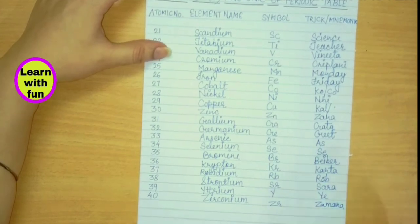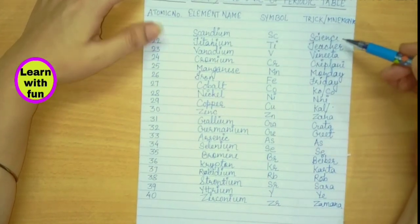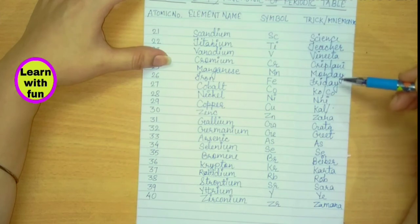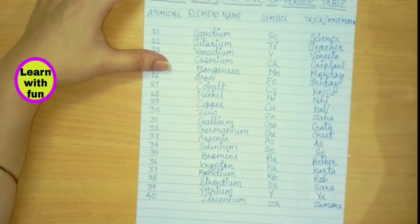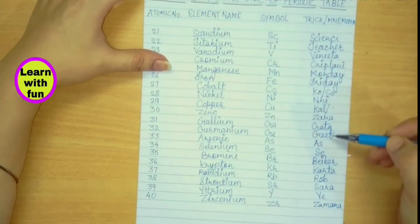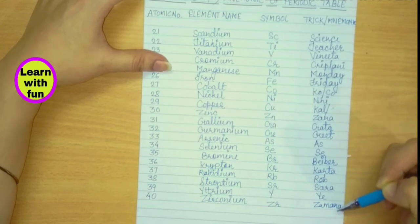So here is the trick. Let's revise it once. Science teacher Vinita Kriplani, Monday Friday ko nahi kal jana. Gaata geet aayse Biba karta rob sara ye zamana.